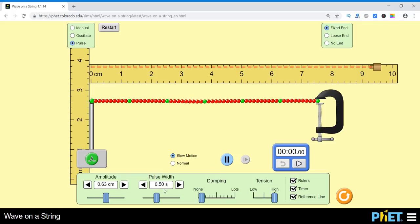And we can also change all these things. You can change the width of the pulse using this. Let's increase the width of the pulse. Now let's give it a pulse. So the width of the pulse has increased. You can see here. It is slow motion. Let me change it to normal mode.